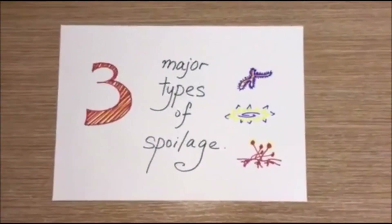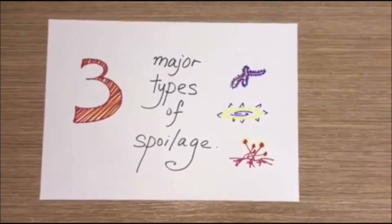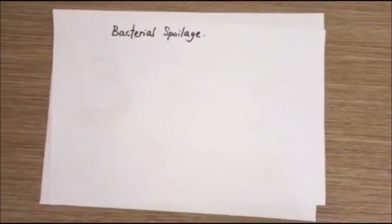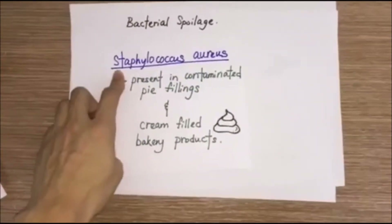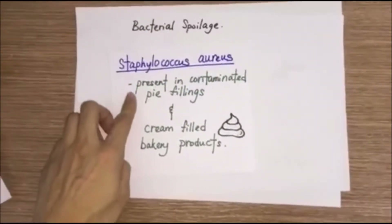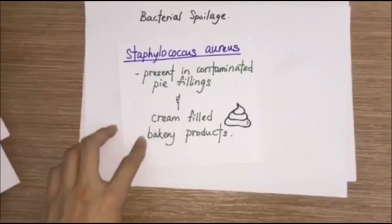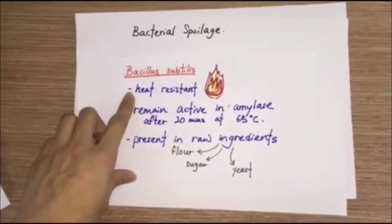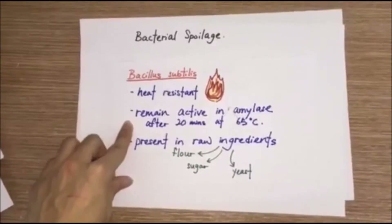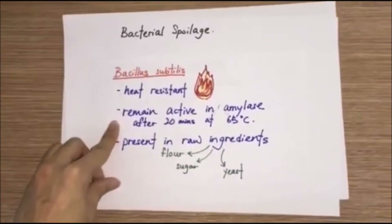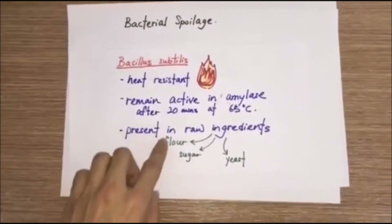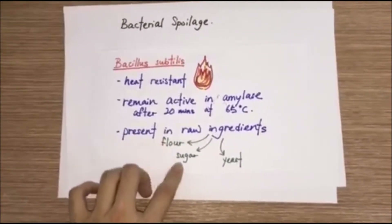There are three major types of spoilage. The first is bacterial spoilage. Staphylococcus aureus is present in contaminated pie fillings and cream-filled bakery products. Bacillus subtilis is heat resistant — it remains active in amylase after 20 minutes at 65 degrees — and it is present in raw ingredients such as flour, sugar, and yeast.